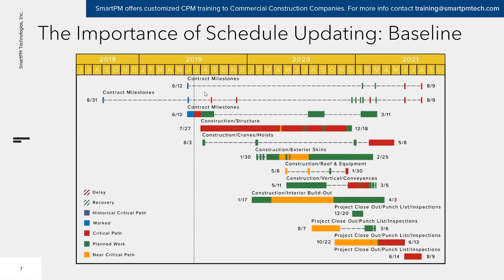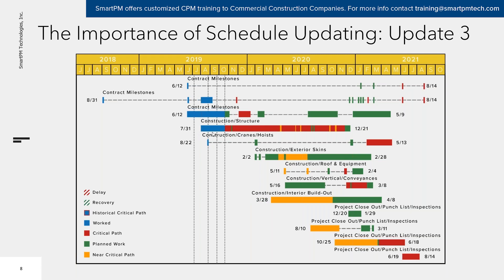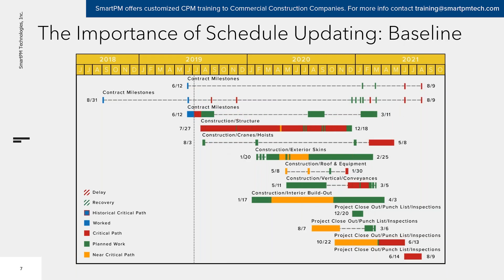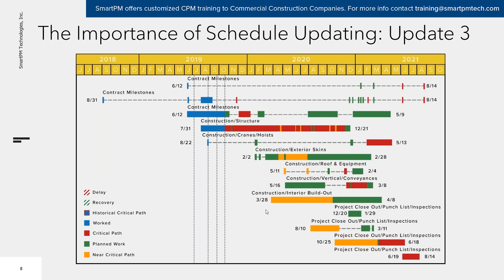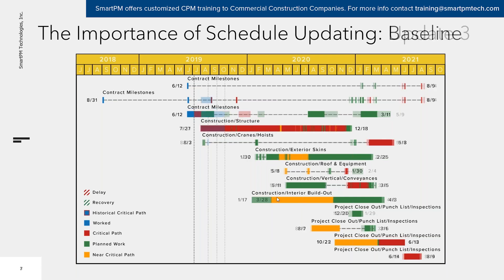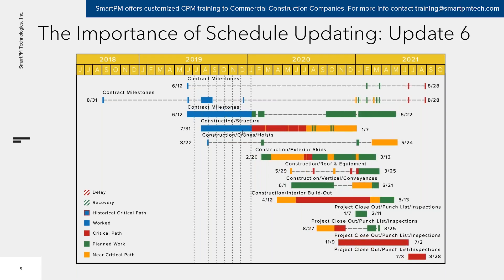Here's a visual example from SmartPM showing why updating is important — it's a one-page representation of a project showing critical path and near-critical path across different update periods, typically monthly, which is usually a contractual obligation. I prefer weekly or every two weeks, but monthly is generally the minimum. Looking at different updates, you can start seeing things moving around — similar critical paths early on, but then you start seeing shortening of durations or items getting pushed out.